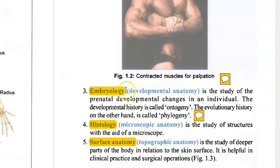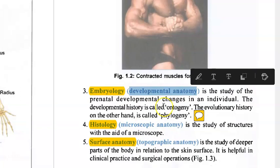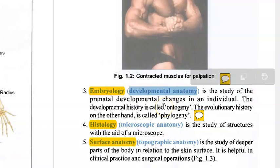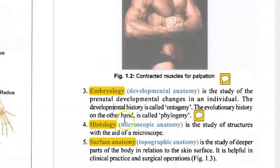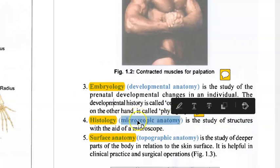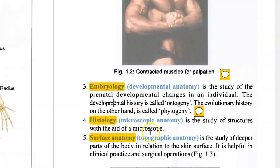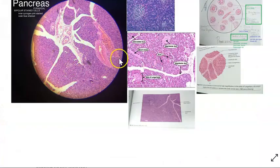Embryology is developmental anatomy — how an embryo becomes a human being. It is very complicated. Histology is the microscopic anatomy — what you see under the microscope: cell structure, tissue structure, etc.